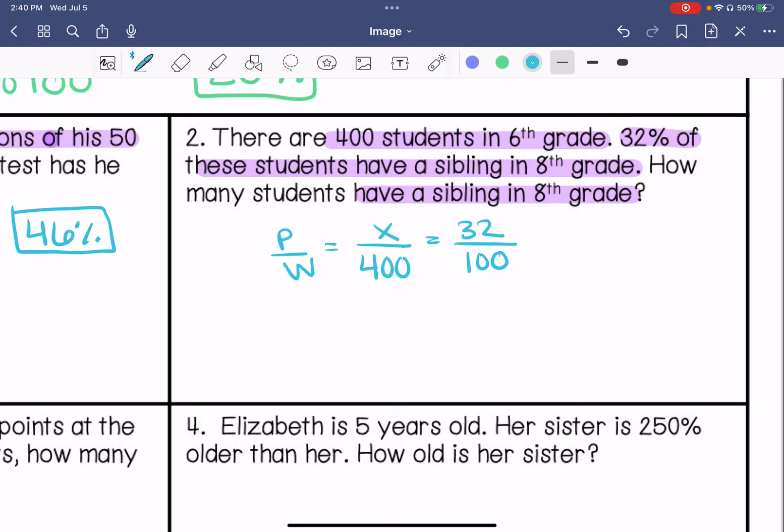So we know that 100 times 4 is 400. So what is 32 times 4? That is 128 students in 6th grade have a sibling in 8th grade.